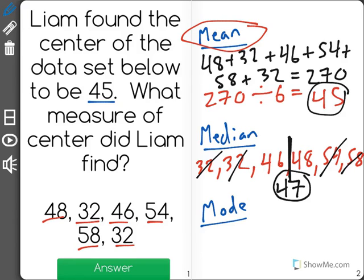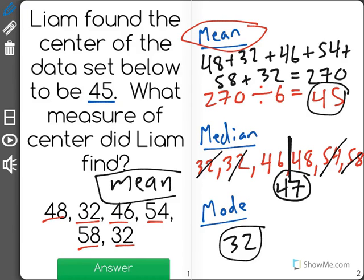So right now our mean is 45, our median is 47, and our mode, the number that shows up the most often, is 32. So in this case Liam found the mean because he found his measure of center to be 45.